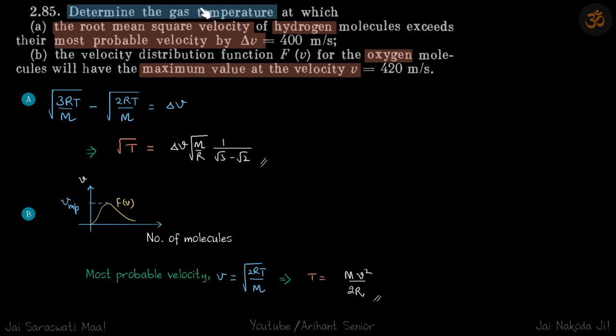We need to find the temperature at which the maximum value of the velocity in the velocity distribution function is known to us. So this is for the oxygen molecule. This is how the curve of velocity distribution looks like, and the peak of this curve is the most probable velocity.